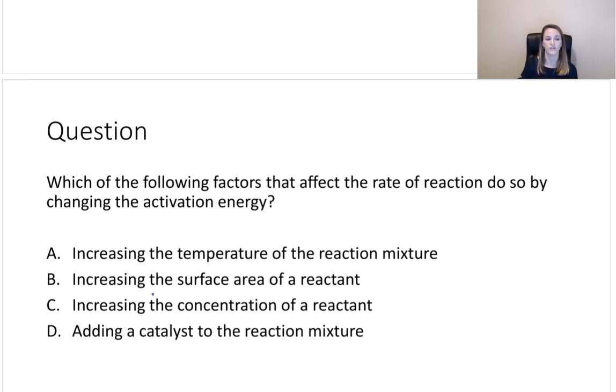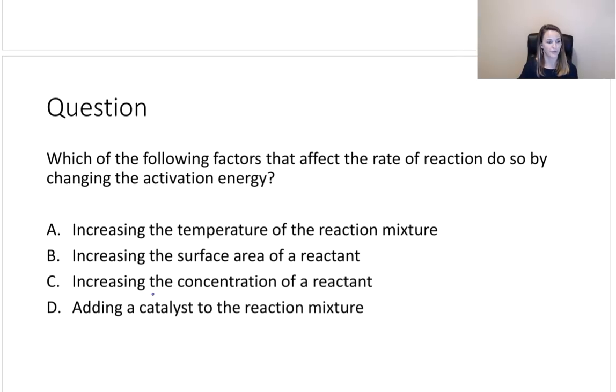The very last one, number four, which is why I've separated it with a line, is catalysts. So first things first, before we even do that: which of the following factors that affect the rate of reaction do so by changing the activation energy? Your option A is that you can increase the temperature of the reaction mixture. B, you can increase the surface area of a reactant. C, increase the concentration of a reactant. Or D, add a catalyst to the reaction mixture. What do you think?